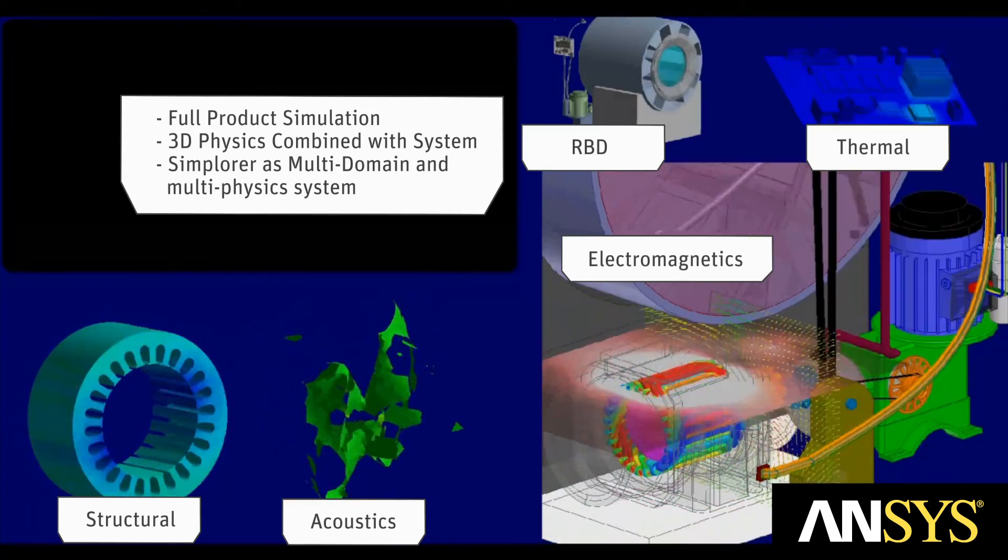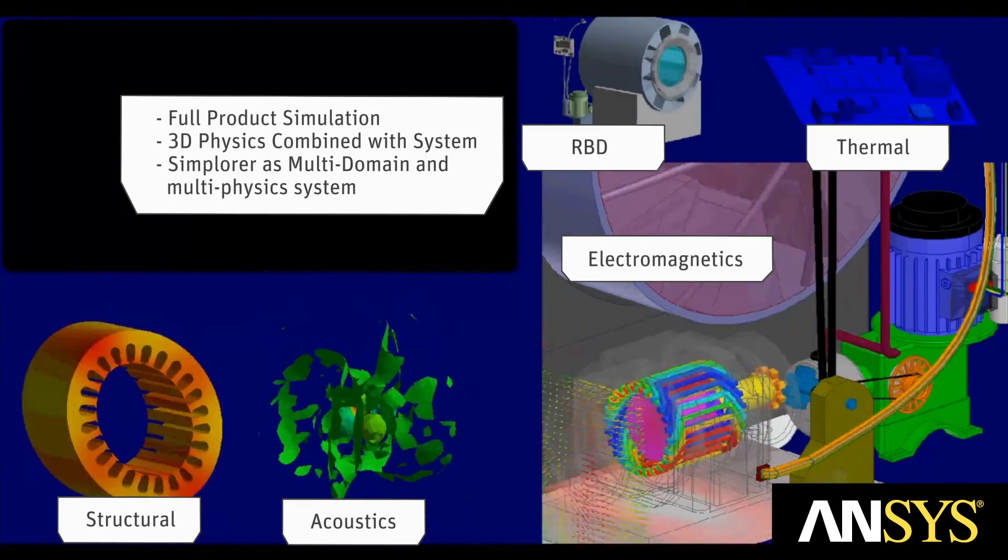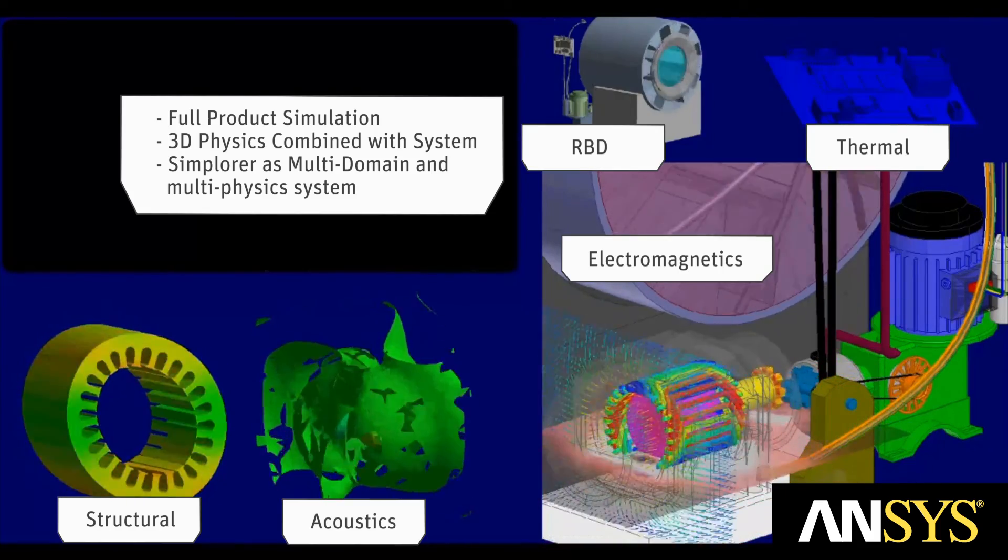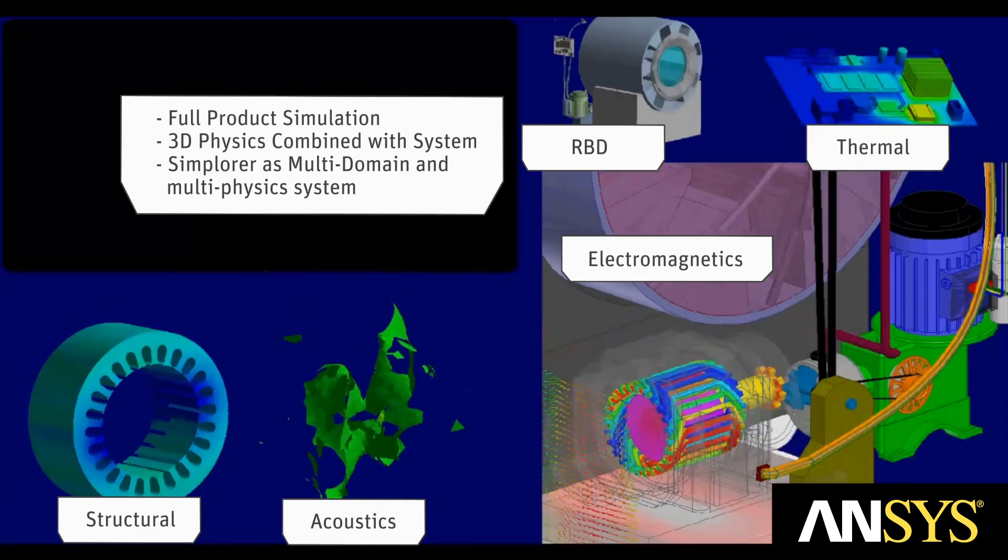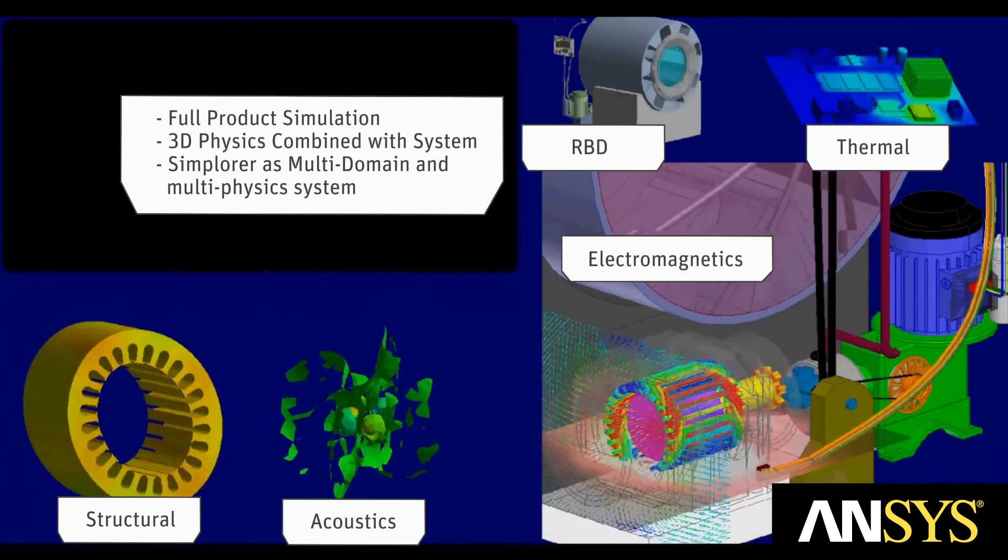In this example, we demonstrated full-product simulation that combines 3D physics simulation with system analysis. ANSYS Simplora is used to bring together numerous technologies, including Maxwell, SkateSuite, IcePack, Mechanical, and Rigid Body Dynamics.